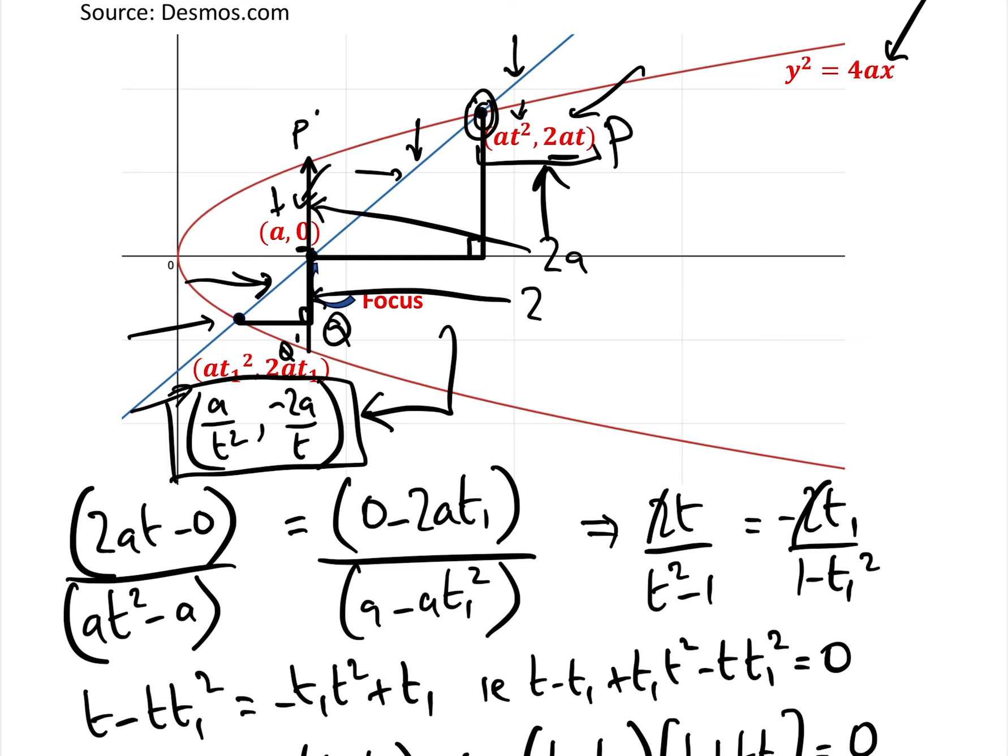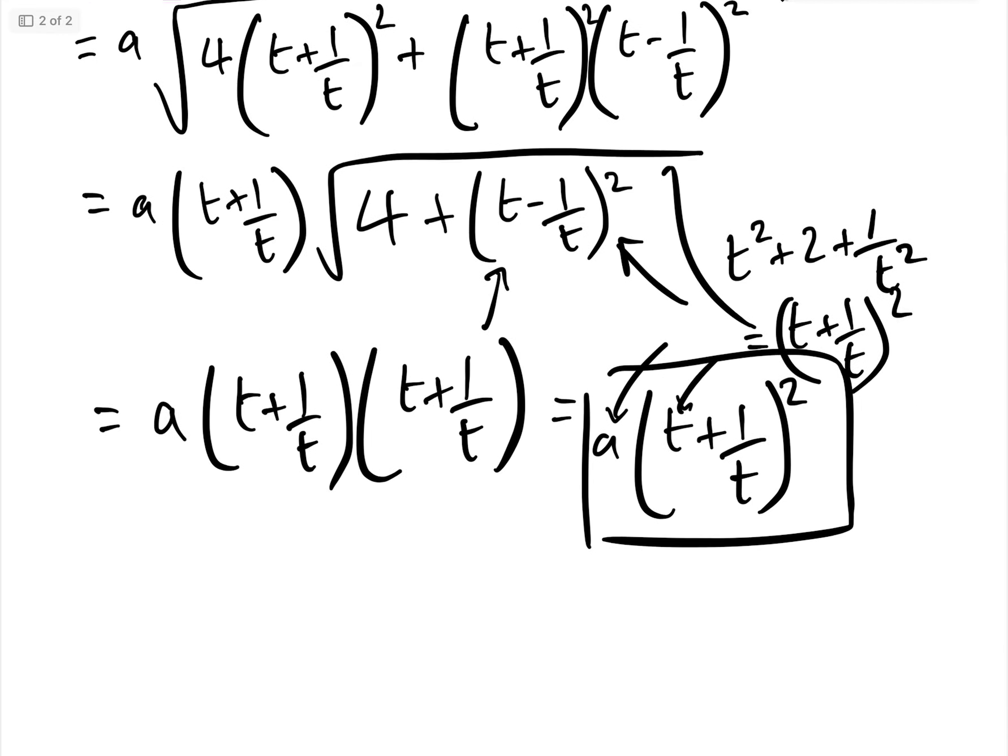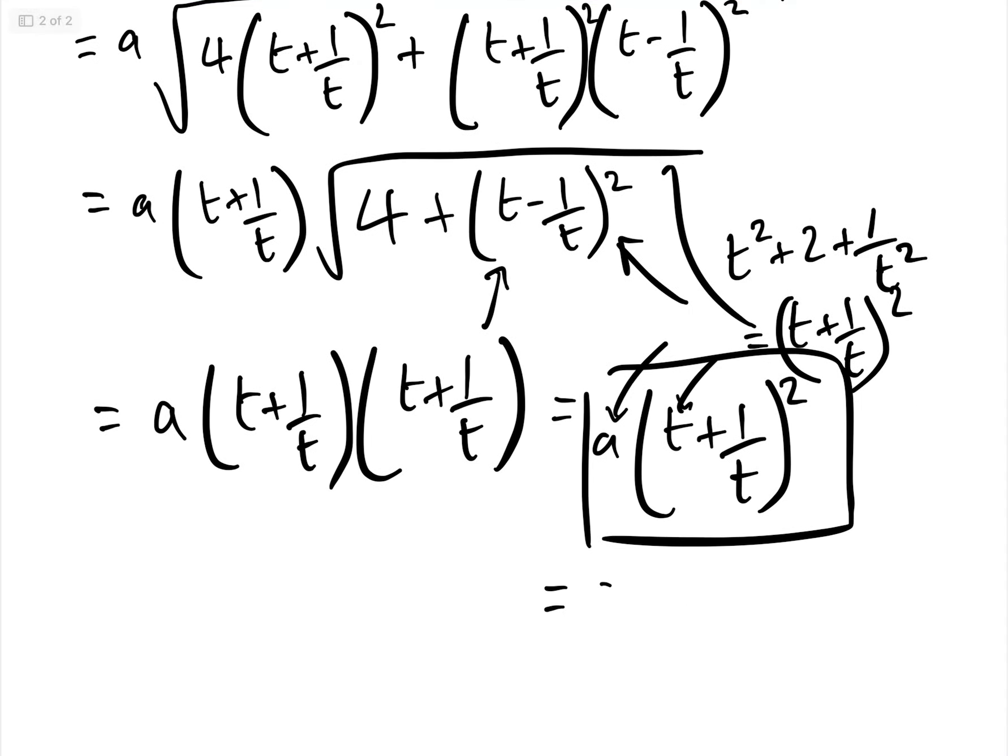But the latus rectum, this distance is 2a, and this distance is also 2a, so the total distance of the latus rectum from p dash to q dash is 4a. Well, we can actually prove that, because this point here would be when t equals 1,